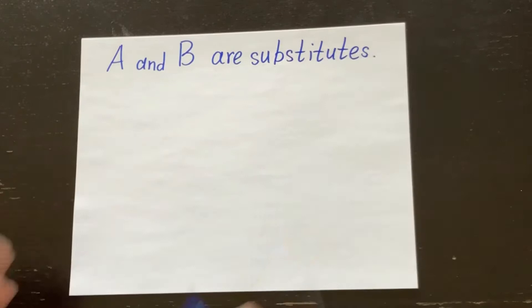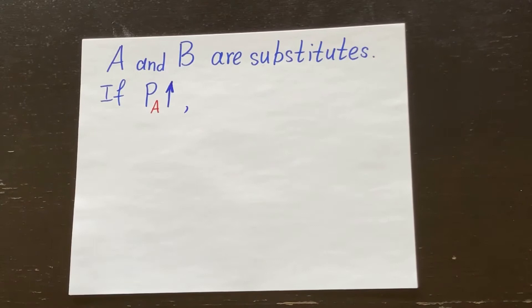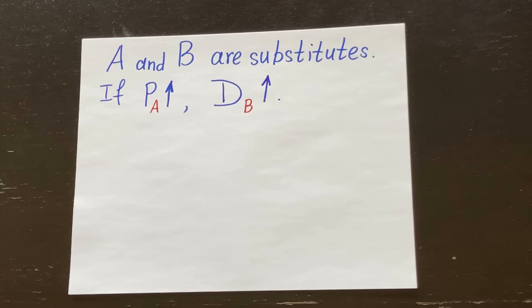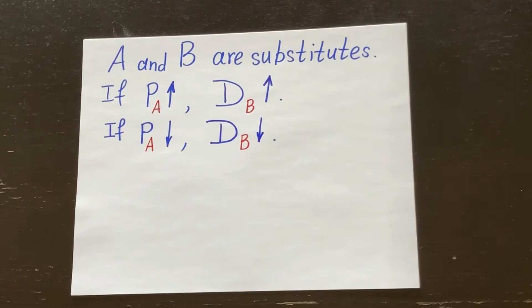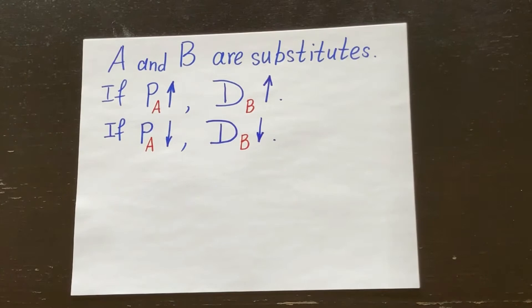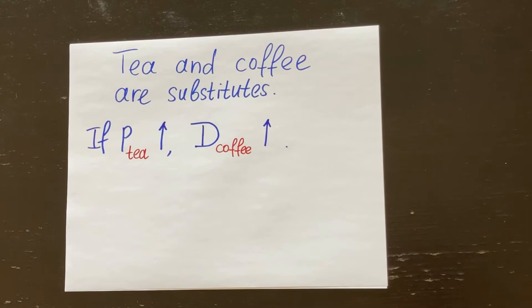Goods A and B are substitutes. If the price of good A rises, good A becomes more expensive, and since A and B are substitutes, people will replace the expensive A with the cheaper good B — they will buy less of A and more of B, so demand for good B will rise. Similarly, if the price of A falls, good A becomes cheaper, people will buy more of A and less of B, and demand for B will fall. For example, tea and coffee are substitutes. If the price of tea goes up, tea is more expensive, so people will buy less tea and more coffee — the demand for coffee will go up and the demand curve will shift to the right.